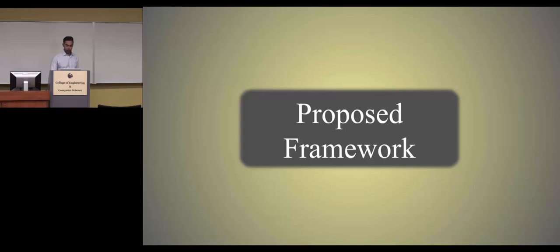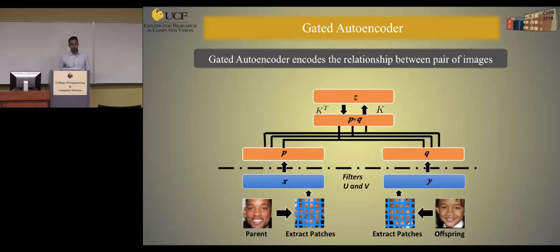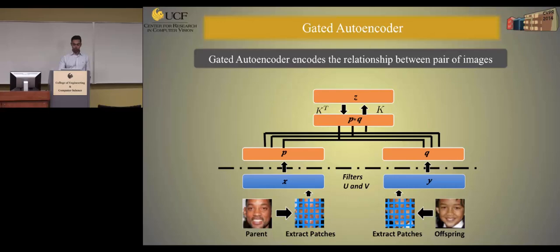Now let's look at the framework we used to answer the questions raised in the previous slides. The backbone of our system is based on a recent deep learning approach called gated autoencoders. Gated autoencoders are different from traditional autoencoders in that they focus on encoding the relationship between a pair of images, rather than the representation of each individual image. This makes them well suited to our problem, since we are interested in encoding the relationship between facial features of parent and offspring.